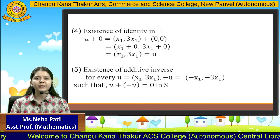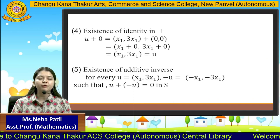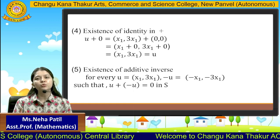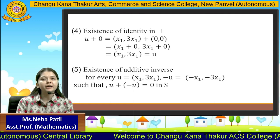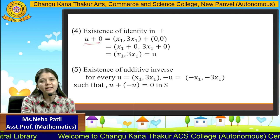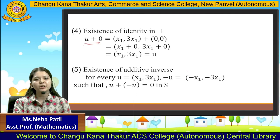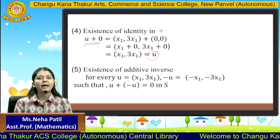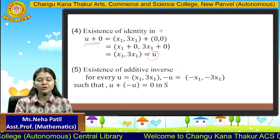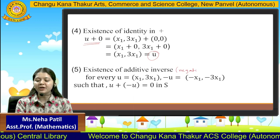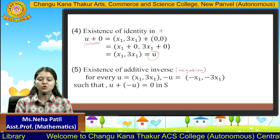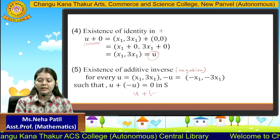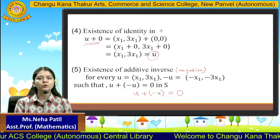The next property is existence of additive identity. We should have one element such that when it is added with any element of that particular set, the result is that element itself. Our additive identity element is 0, and 0 added with any element u will always give u. So additive identity is satisfied. Next is existence of additive inverse. The additive inverse is the negation of that particular element, so for every element u, the additive inverse is −u, and u + (−u) will always result in 0.